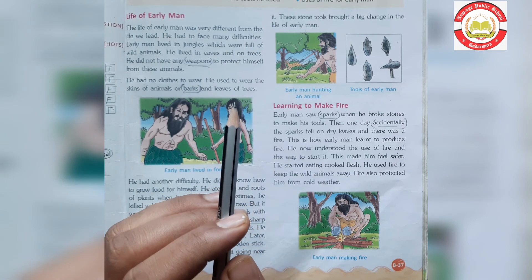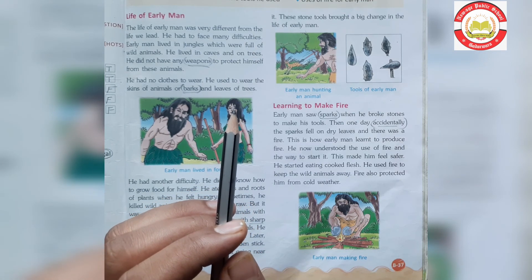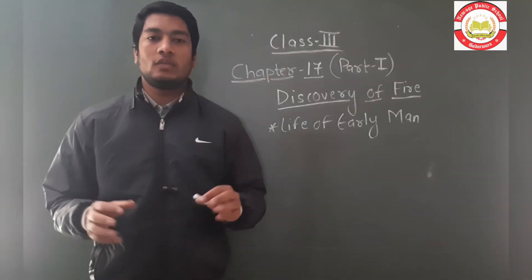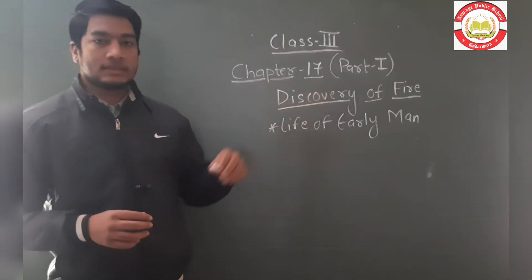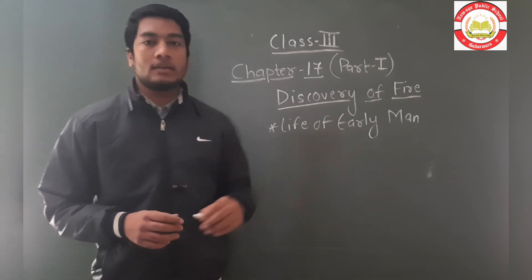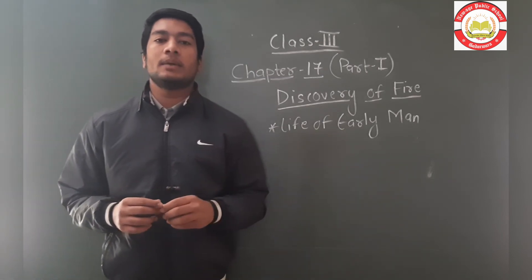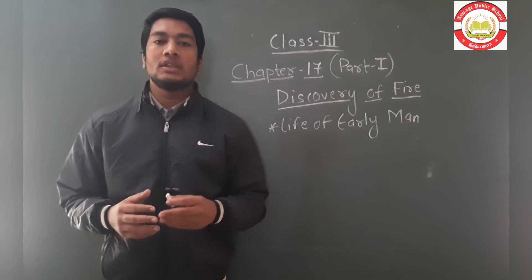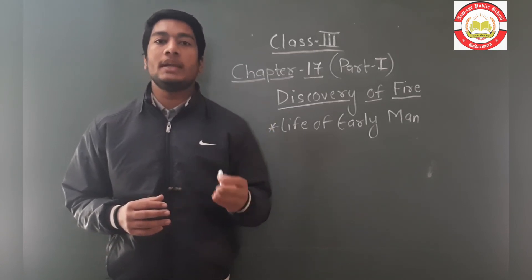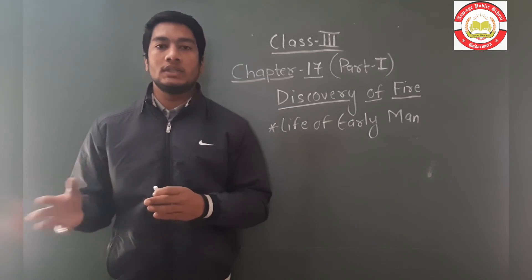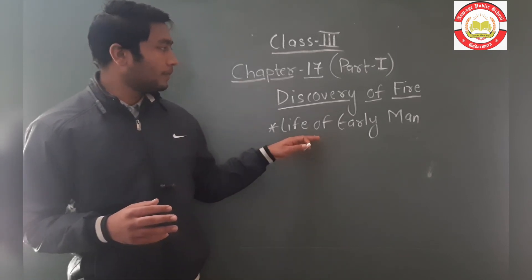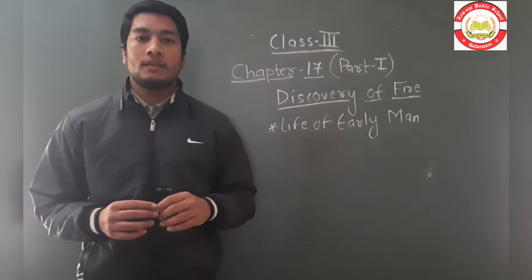Now part number one is complete. We have seen the life of early man — the food eaten by early man, the clothes they were wearing at that time, and the tools they made from stones and wooden sticks. That's all for this video.